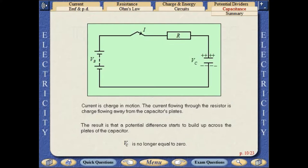Current is charge in motion. The current flowing through the resistor is charge flowing towards the capacitor's plates. The result is that a potential difference starts to build up across the plates of the capacitor. VC is no longer equal to zero.